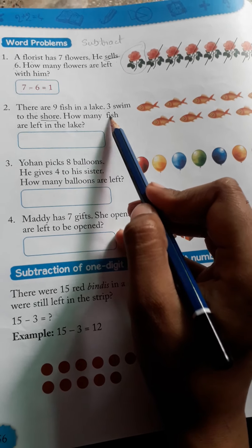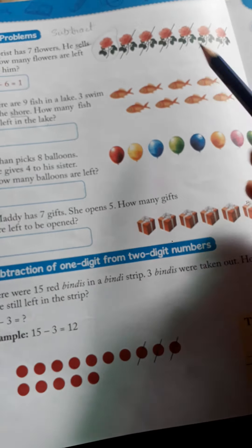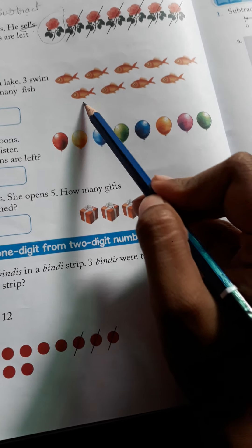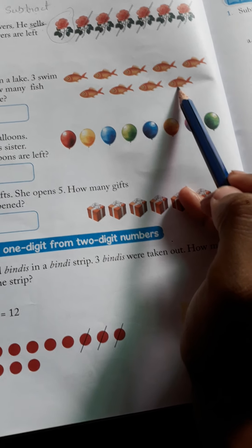Let me count: 1, 2, 3, 4, 5, 6, 7, 8, 9. That's 9 fishes.